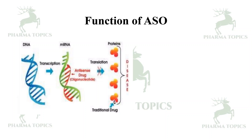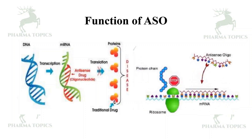The function of antisense oligonucleotides: from the diagram, DNA produces mRNA, which leads to disease-related proteins. Antisense oligonucleotides target this mRNA and prevent the formation of faulty proteins. They bind to the mRNA and stop production of faulty proteins at the ribosomes.